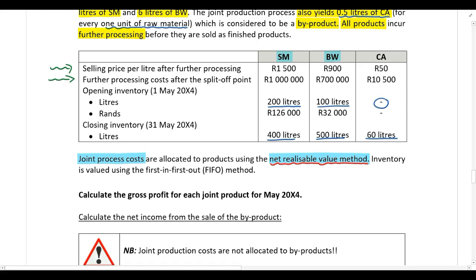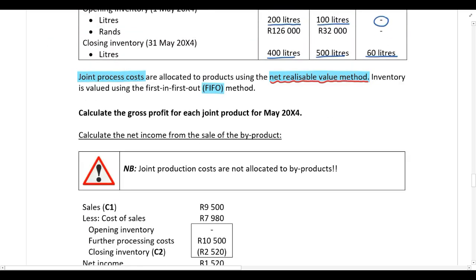Inventory is valued using the first-in-first-out method. The required asks us to calculate gross profit for each of the joint products for May 20X4. Before allocating joint costs, we must first calculate the income from the sale of the byproduct, because the income from the byproduct needs to be offset against the joint costs before those costs are allocated to the joint products.